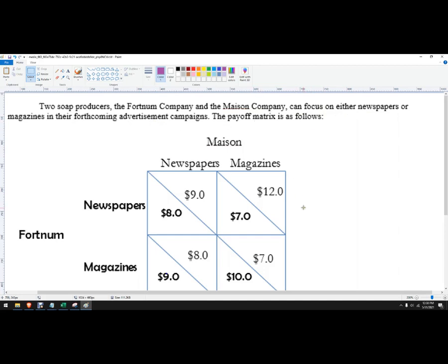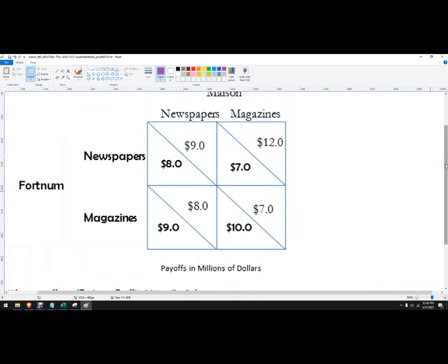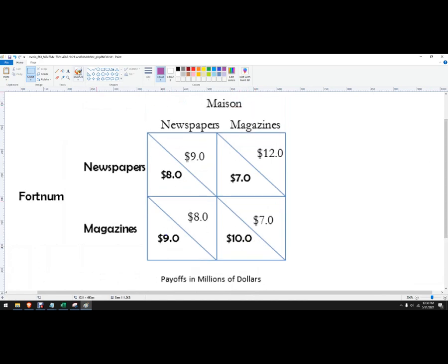The payoff matrix is as follows, and the payoffs are in millions of dollars. So what we're gonna do is solve this problem, and by solve it I mean we're gonna see who should do what. I'm gonna do Fortnum in purple and Mason in orange.